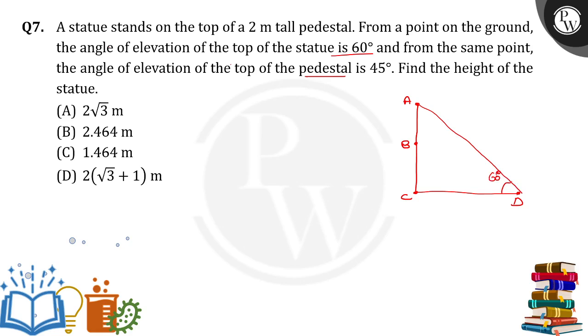And from the same point, the angle of elevation of top of the pedestal, so top of the pedestal is B point, which is 45 degrees. So find the height of the statue. Height of the statue means H I have to find. And the height of the pedestal is given which is 2 meters. The height of the pedestal is given 2 meters. And the distance from the foot of the pedestal to the observation point, taking as X.